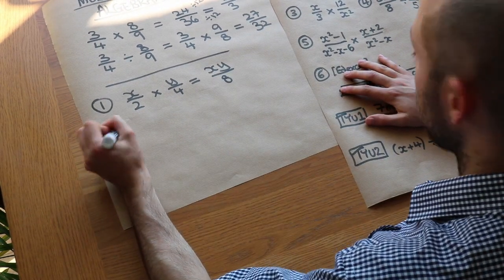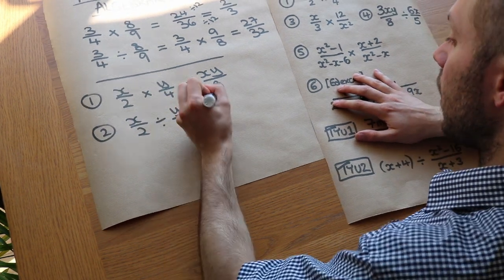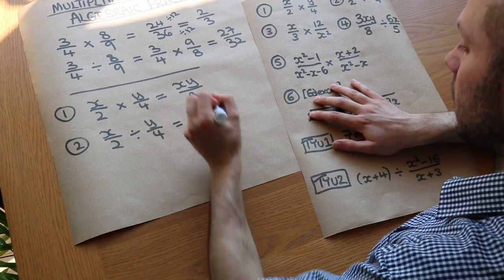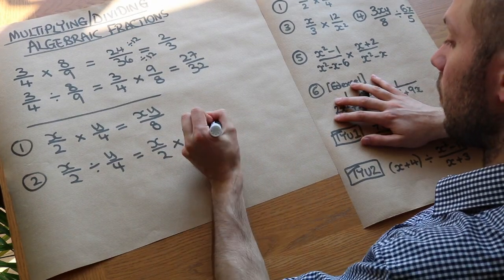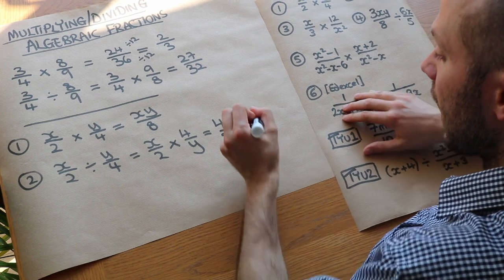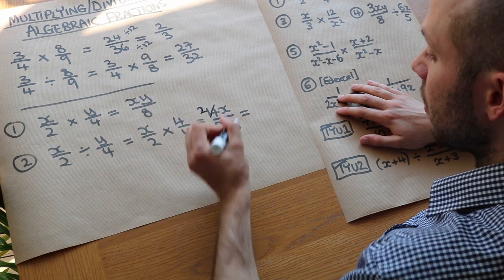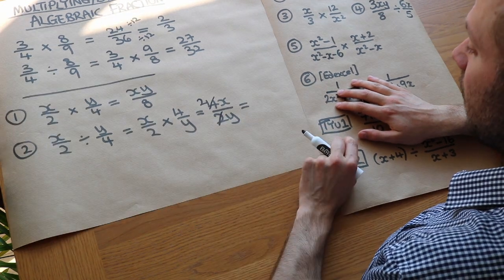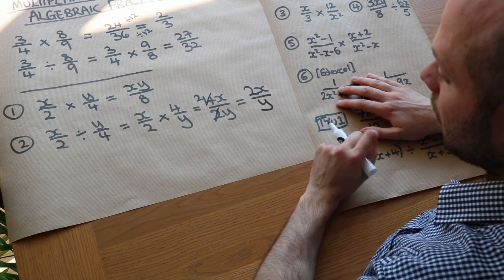For x over 2 divided by y over 4, remember with the second fraction you multiply by it instead and you reciprocate it — you flip it. So you get 4 over y. Multiplying the numerators gives 4x, and 2 times y is 2y. We can divide top and bottom by 2: 4x becomes 2x, and 2y becomes y. So we get 2x over y.